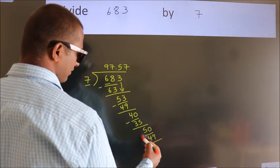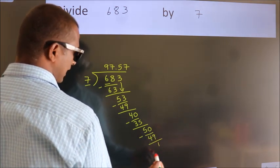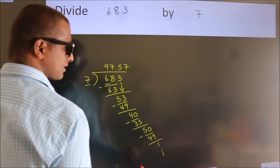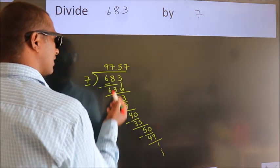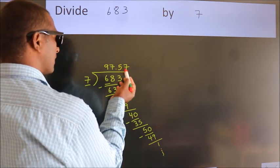Now we subtract, we get 1. And the division continues. It is enough if we do up to 2 decimal places.